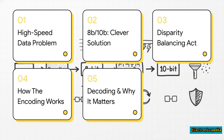Here's the game plan for today. We're going to start with the big problem — why sending data really fast is, well, really hard. Then we'll look at the super clever solution, 8B/10B. We'll dive into how it keeps everything perfectly balanced, walk through the actual step-by-step process, and finally wrap up with why it all matters and the legacy it left behind.